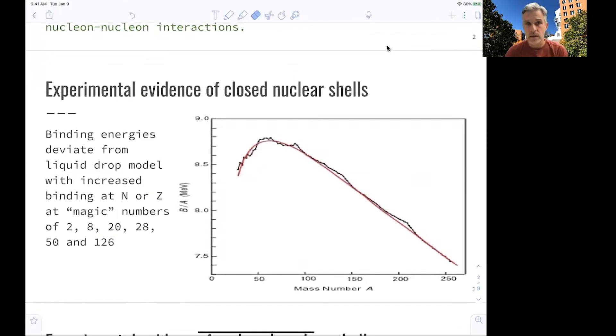Before we go there, we look at experimental evidence for closed nuclear shells. Here is our plot of the binding energy, and you see there are those areas here. There seem to be some sort of higher binding energies, and it turns out those happen at so-called magic numbers. Magic numbers are 2, 8, 20, 28, 50, and 126. So the question now is, how can we explain this? Where does this come from?